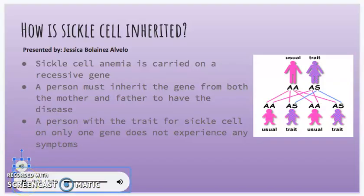How is sickle cell inherited? Sickle cell anemia is carried on a recessive gene. A person must inherit the gene from both the mother and the father to have the disease. A person with a trait for sickle cell on only one gene does not experience any symptoms.